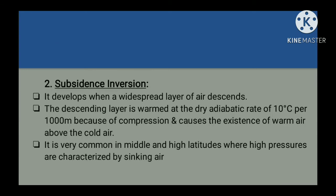The next is subsidence inversion. It develops when a thick mass of air descends. The descending air is warmed due to compression, and as a result the lapse rate of temperature is reduced. If the air mass sinks low enough, the air at higher altitudes becomes warmer than at lower altitudes, producing a temperature inversion. Such inversions are found in latitudes where high pressure prevails, causing atmospheric stability and dry conditions.